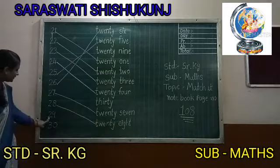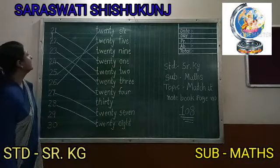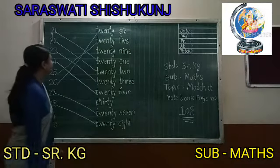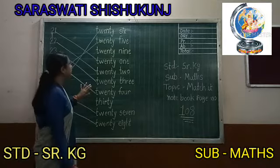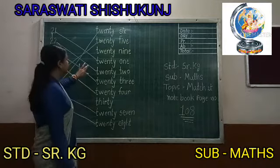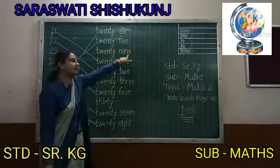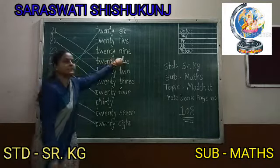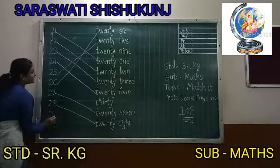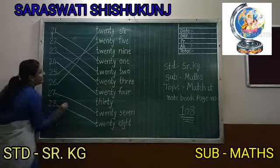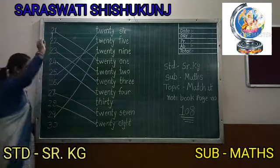Now 29. T, W, E, N, T, Y — Twenty. N, I, N, E — 9. Twenty Nine, 29. So let's match it — 29.